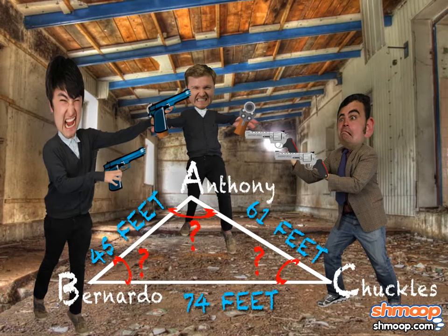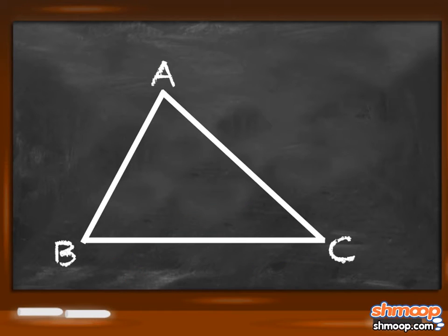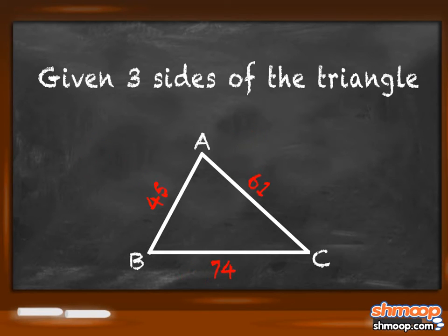Okay, if we picture the scenario as a triangle, the sides are 45, 74, and 61. Given three sides of the triangle, we'll need to figure out the angles with the Law of Cosines.